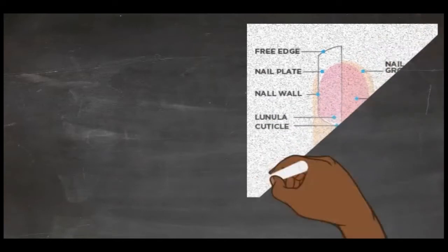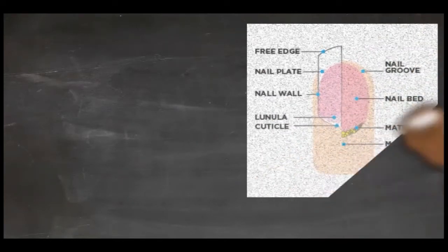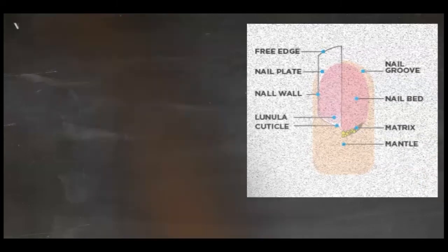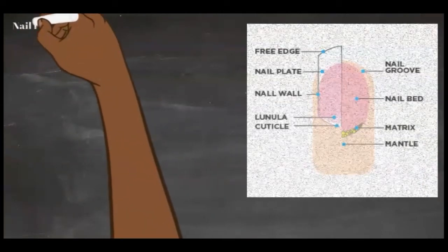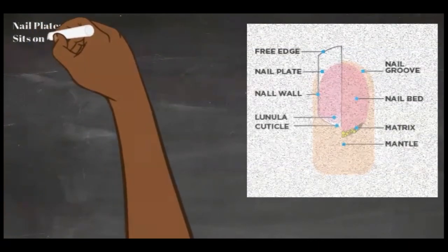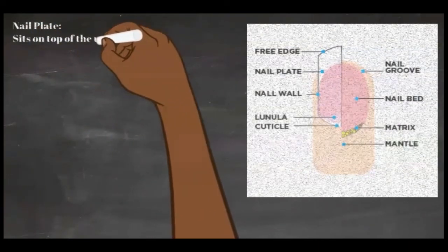The nail plate is the hardened keratin plate that sits on top of the underlying nail bed. The nail plate slowly slides across the nail bed while it grows and is the most visible and functional part of the nail unit. The nail plate may appear to be one solid piece, but it's actually constructed of about a hundred layers of nail cells. The free edge is the part of the nail plate that extends over the tip of the finger or toe.